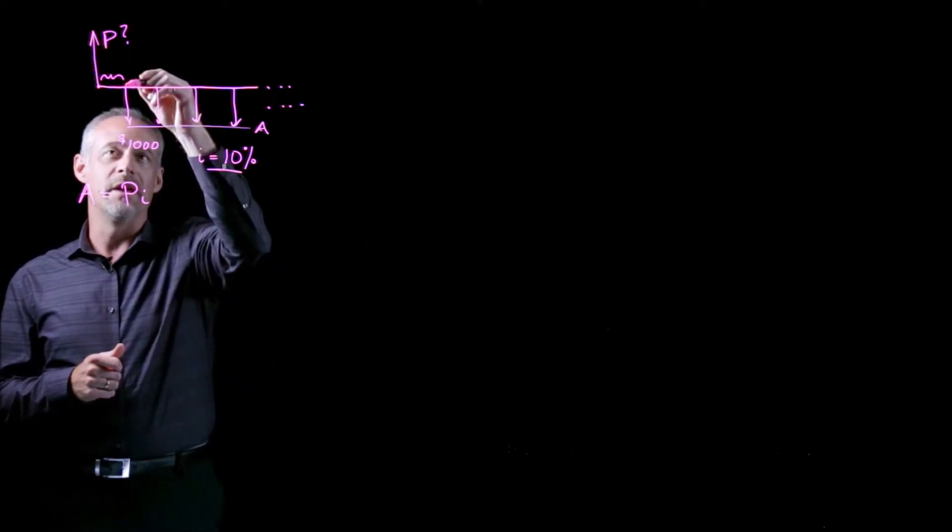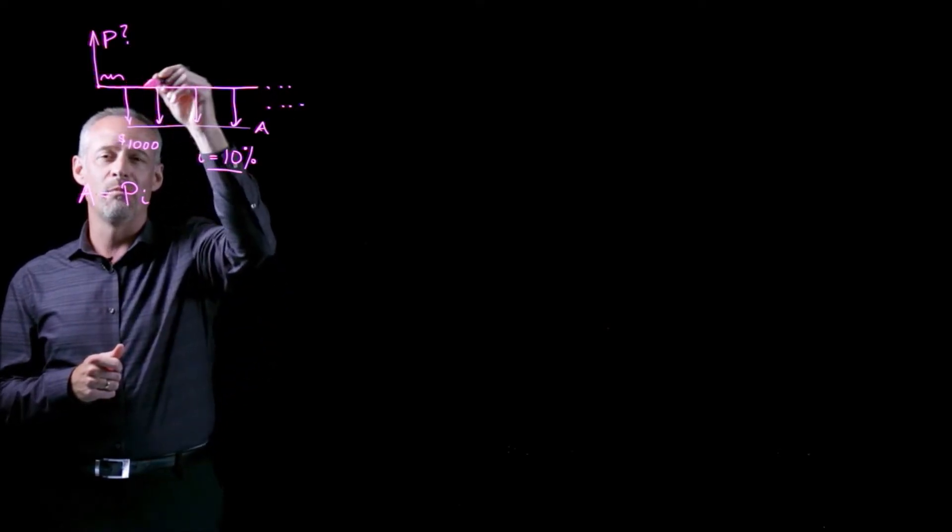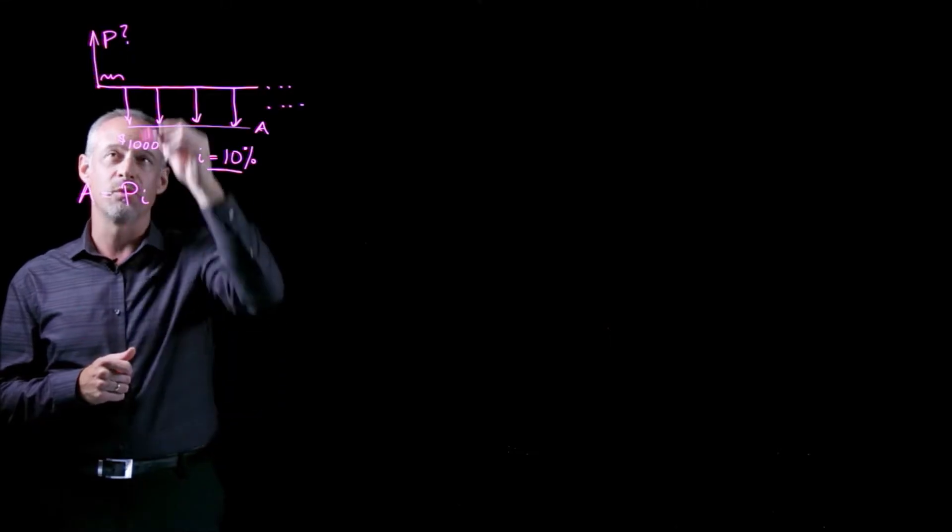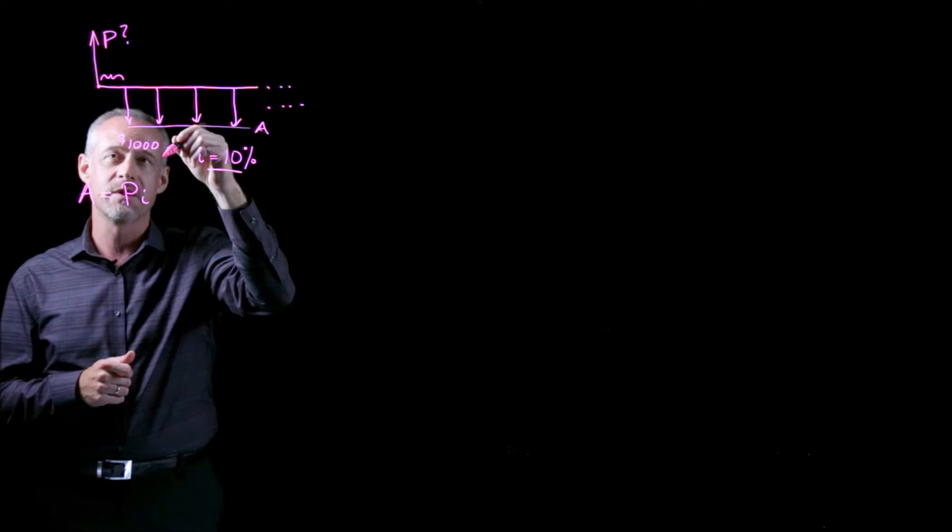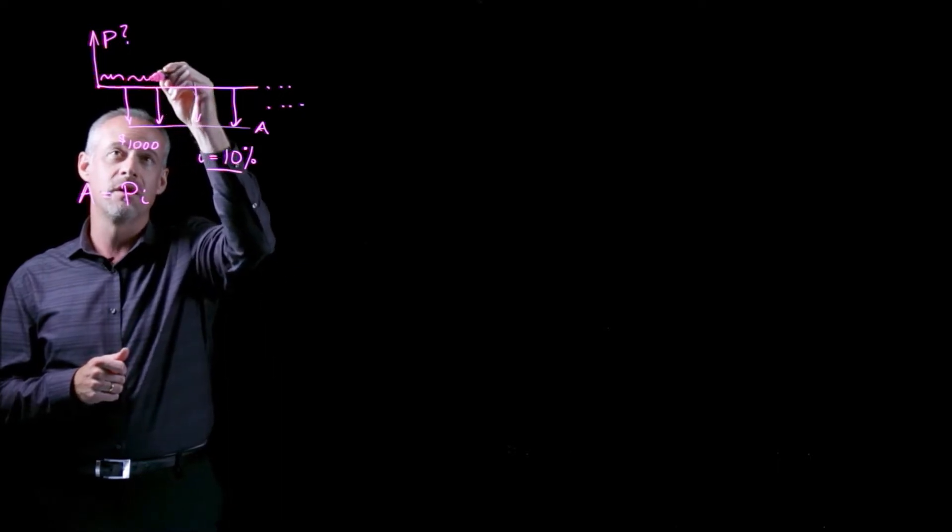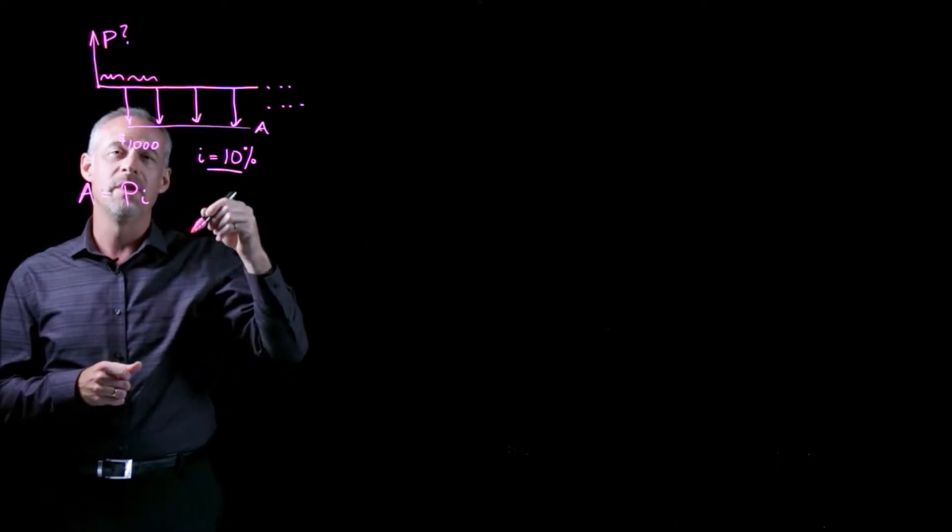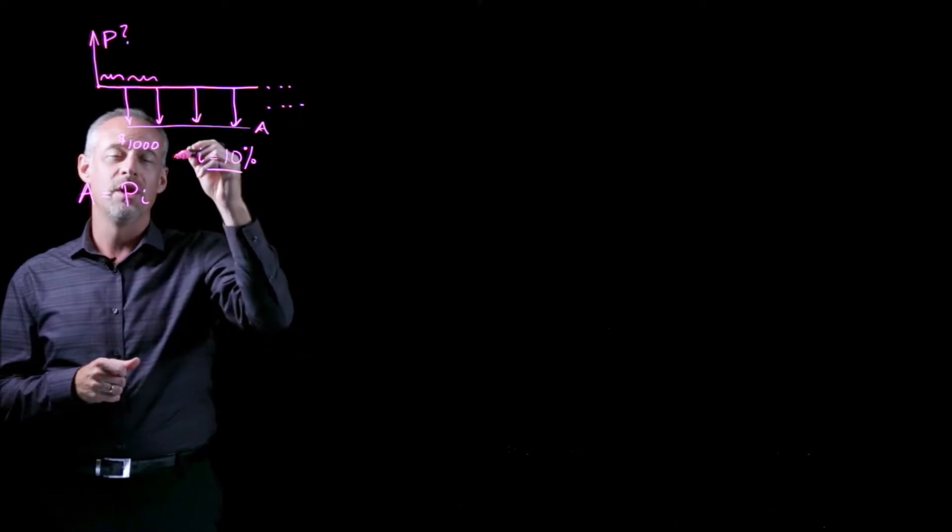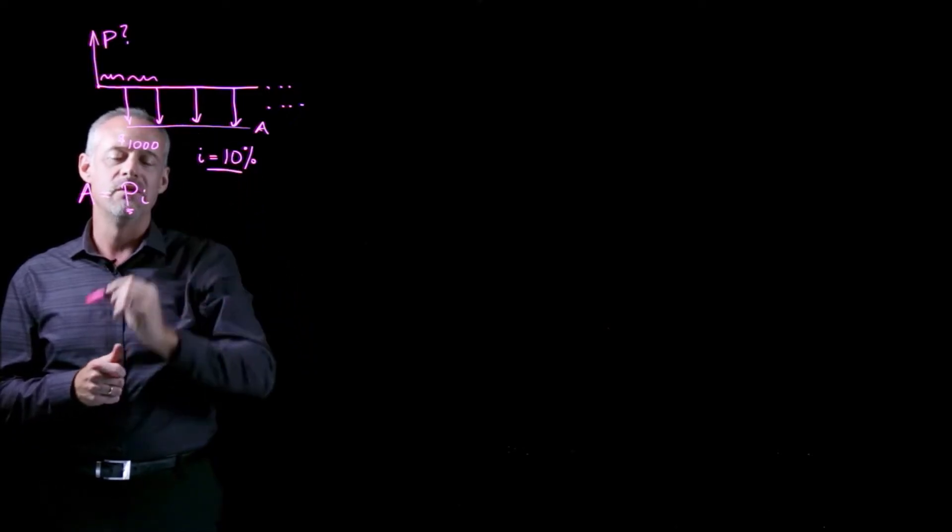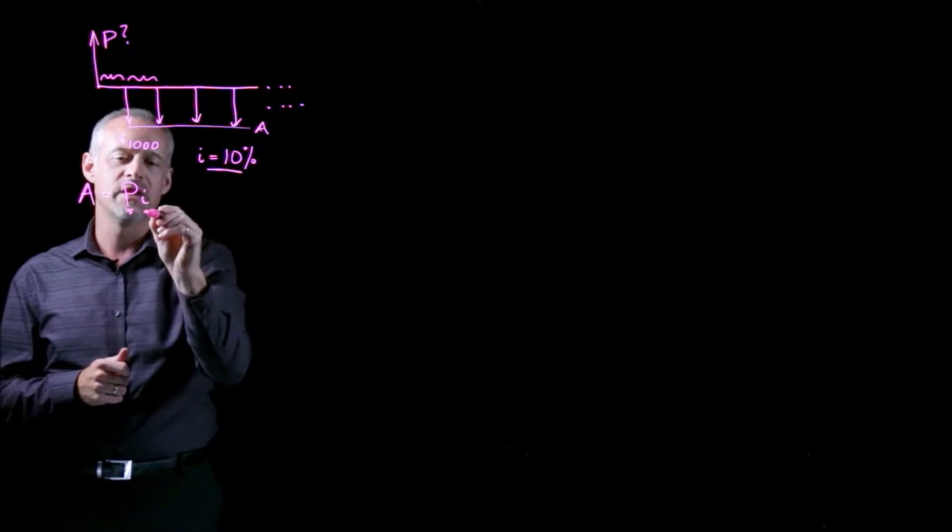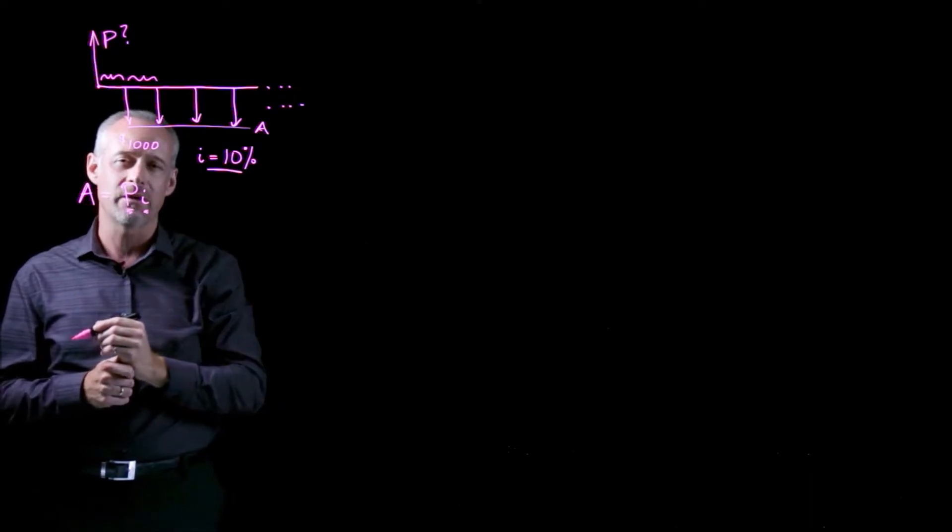So what ends up happening is that during that first year, the initial investment amount earns an interest rate, in this case of 10%, and then pays out its first payment to a student who wins that scholarship. Now at this point in time, we're back to the original starting amount. So we've earned interest for the first period, paid out essentially just the interest, and then the next period, we can earn that same amount.